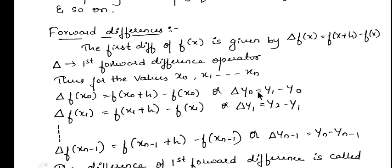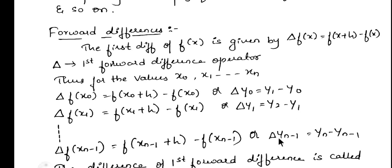Please remember: delta y0 = y1 - y0; delta y1 = y2 - y1; delta y2 = y3 - y2; and so on up to delta y(n-1) = yn - y(n-1). These are the first forward differences.